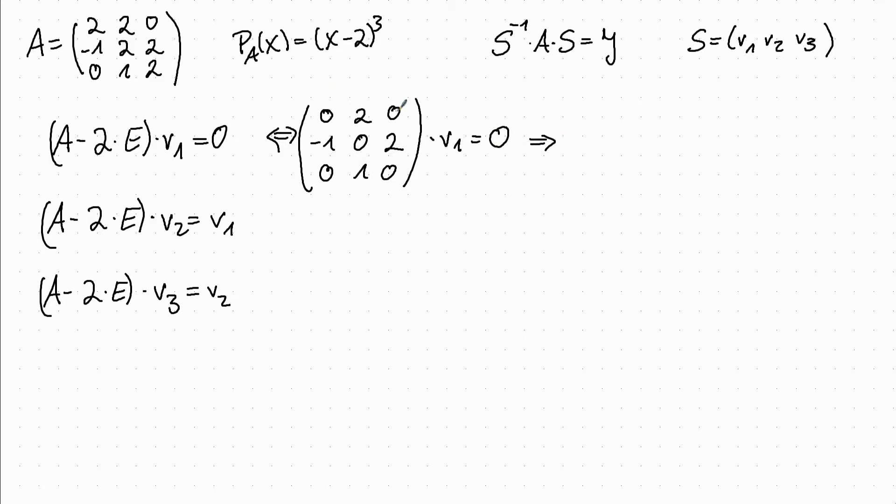So from the first row and the third row we see that the second entry of V1 has to be 0. And this row tells us that we can choose the first entry to be 2 and the third entry to be 1, because then we have minus 1 times 2 plus 2 times 1 is equal to 0.